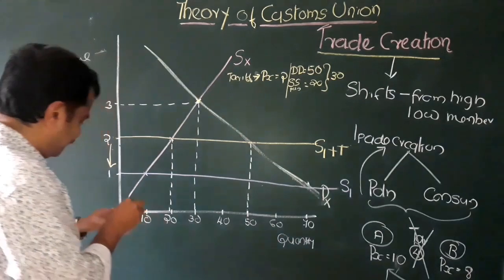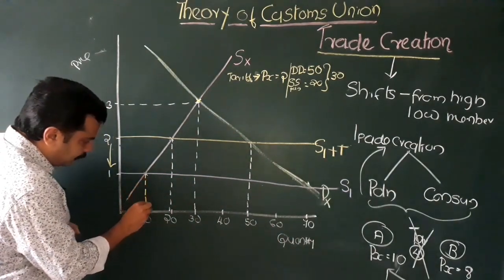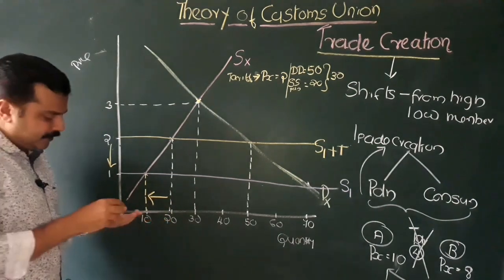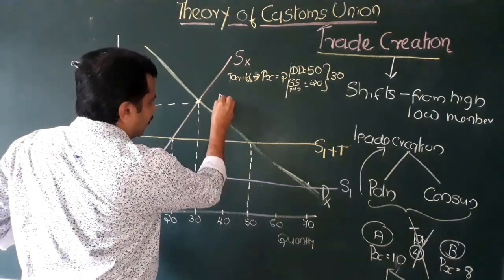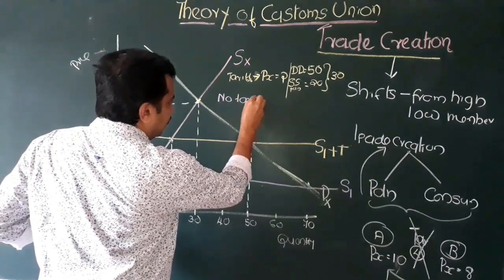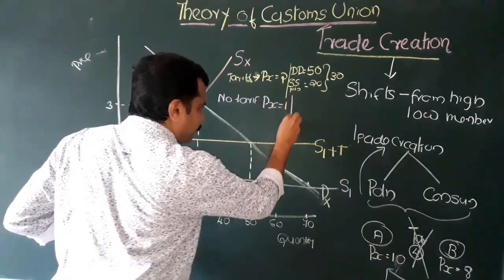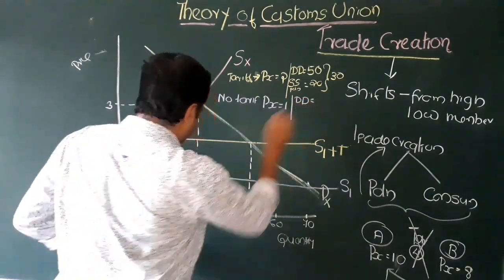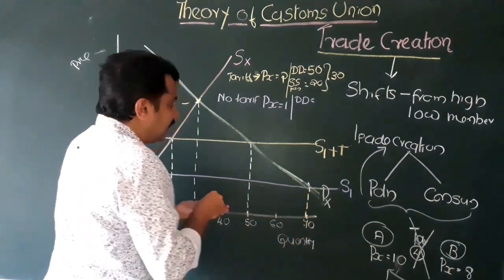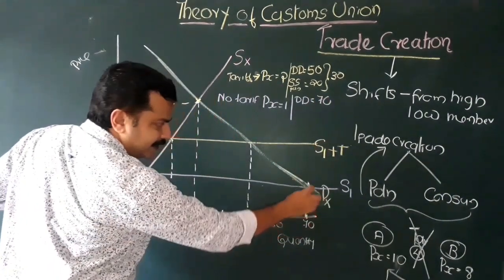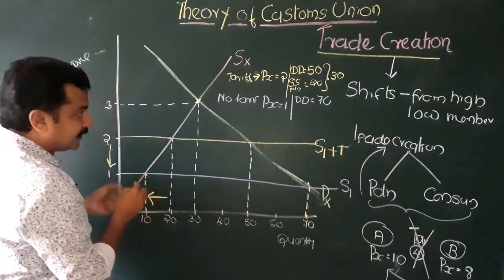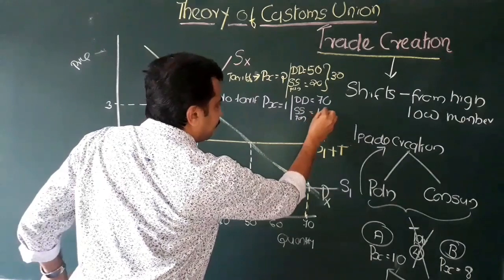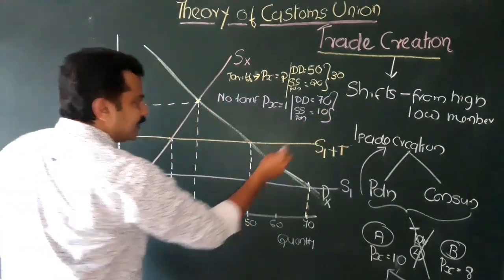See certain interesting points: there is a reduction in the domestic production — from 20 to 10 — which we call the production effect. And there is an increase in consumption: earlier consumption was only 50, now consumption is 70, which we call the consumption effect. The production and consumption effect together form the trade creation effect. That is, the high-cost domestic production is replaced by low-cost imports from Country One. This is trade creation.